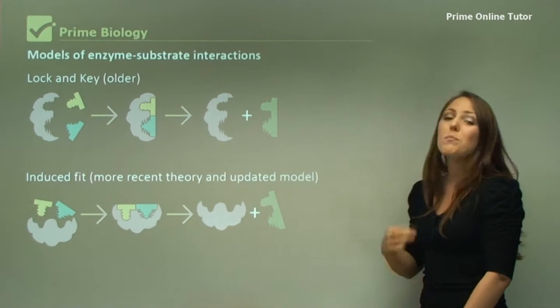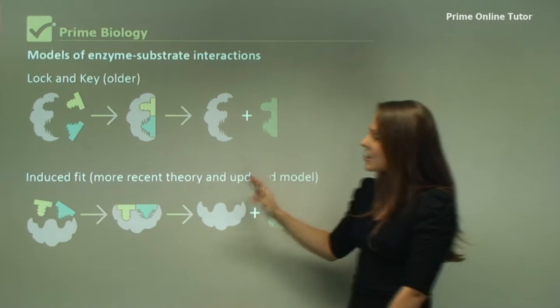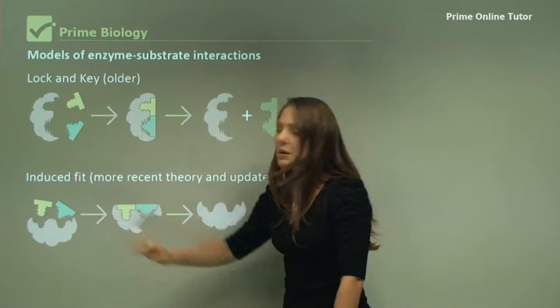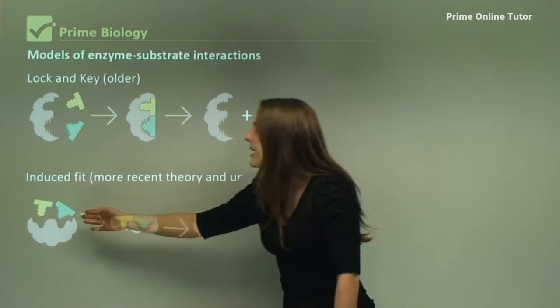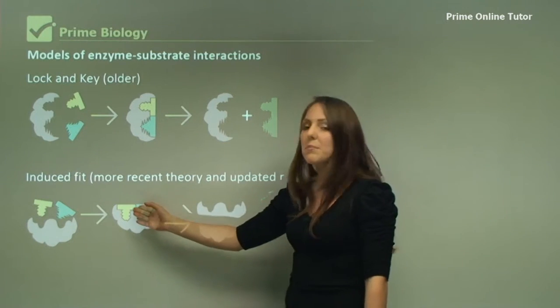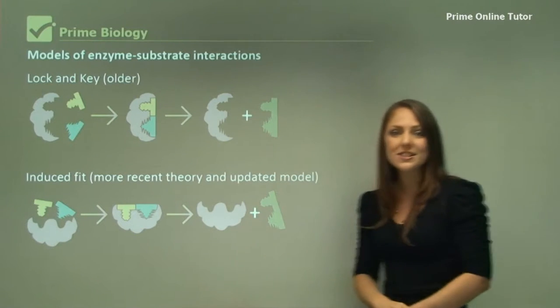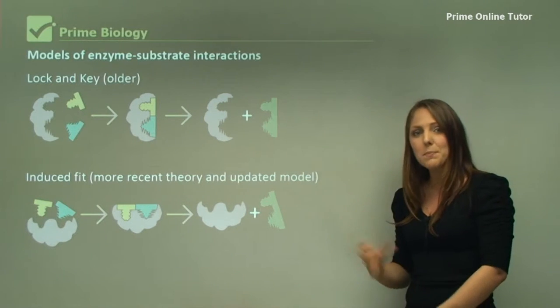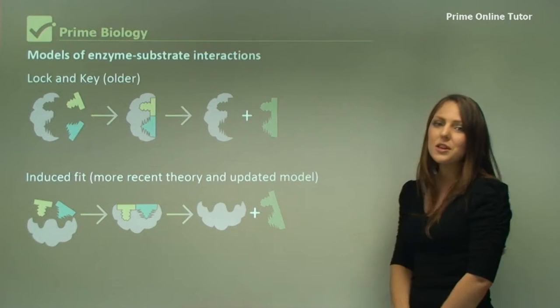Now the induced fit or more recent theory, an updated model, is actually slightly different. The enzyme here has a specific shape as normal, however it's not the same shape as the substrates. As the substrates come and bind, the enzyme actually moves around the substrates to fit them in a better fit, and then it can work on the substrate to create a product.